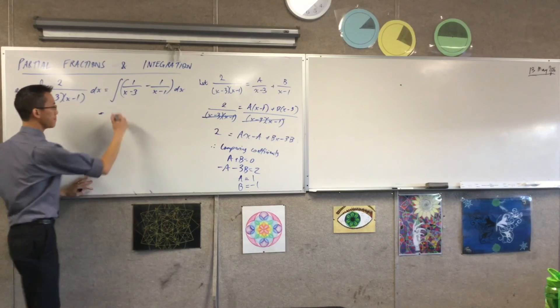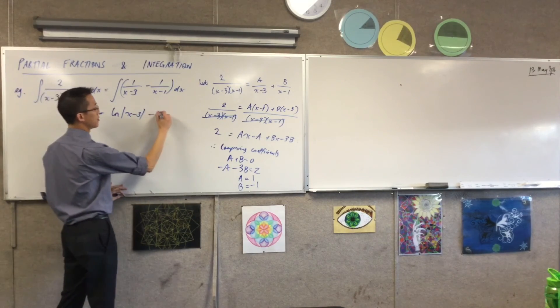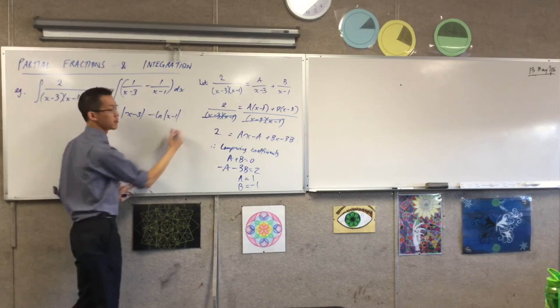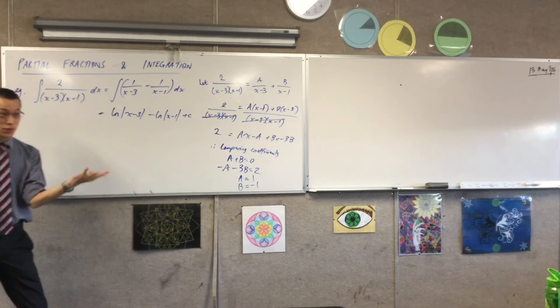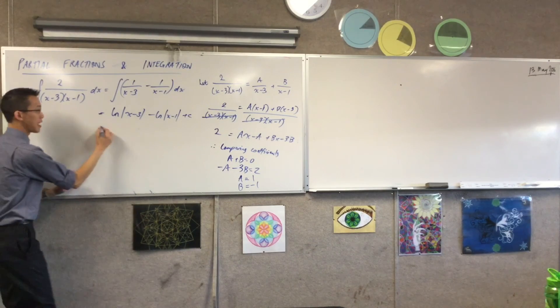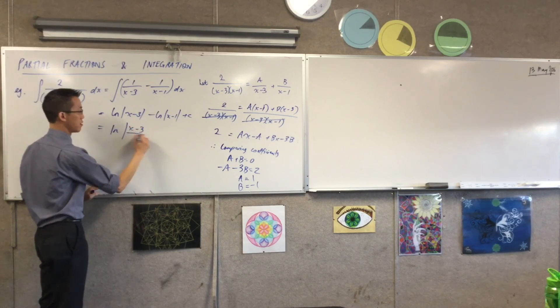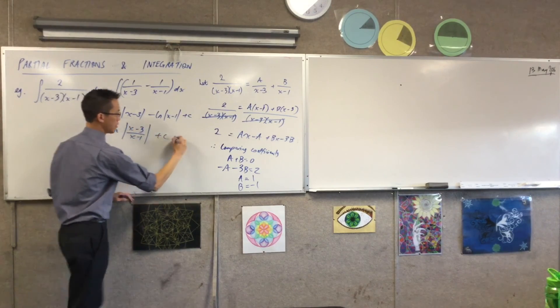What am I going to get? Log of x minus 3 minus ln x minus 1, it's indefinite. Now, because I've got two logs here, there's no reason why I can simplify this a little bit further and say, this is actually log of x minus 3 over x minus 1. Done.